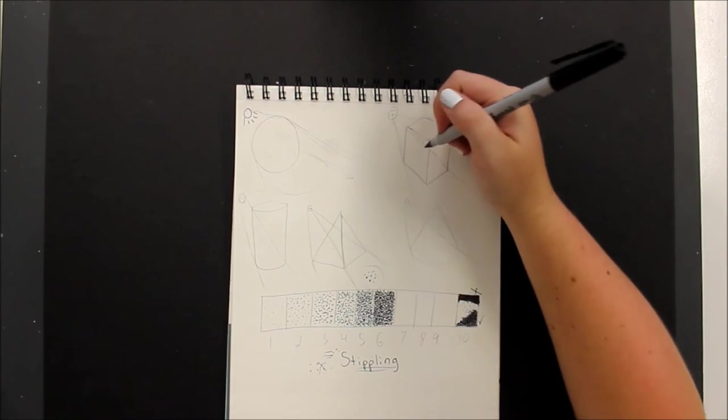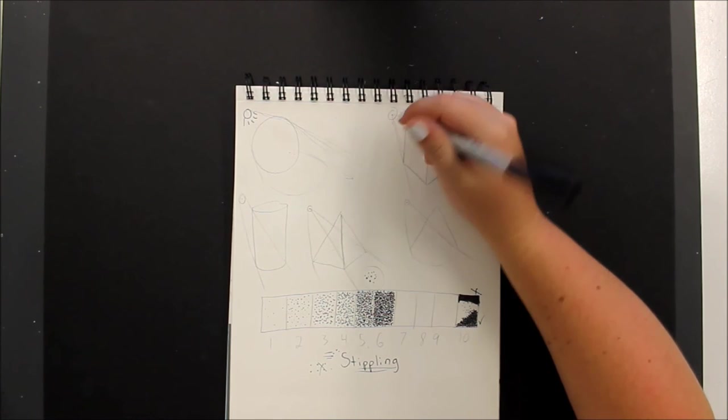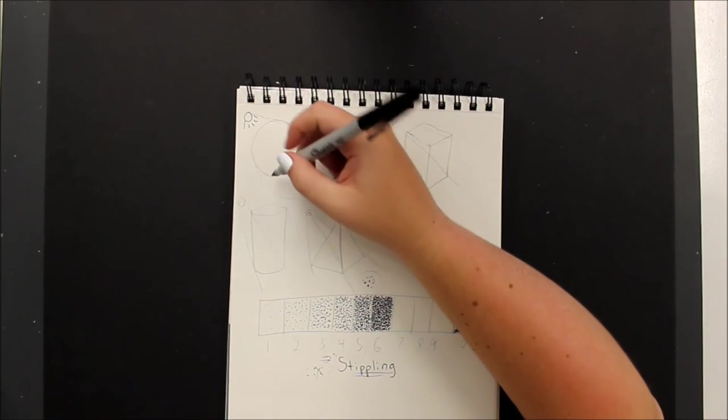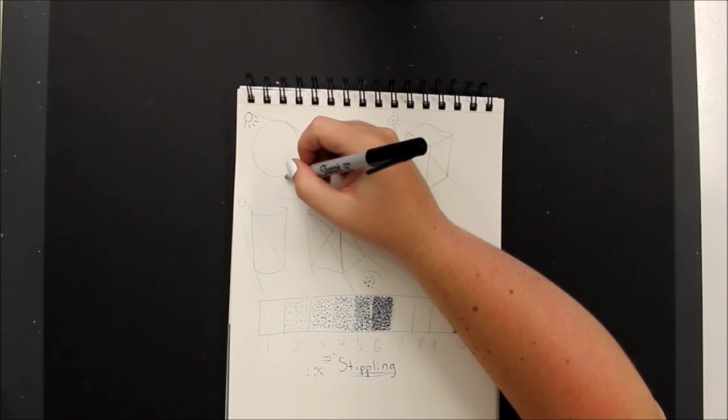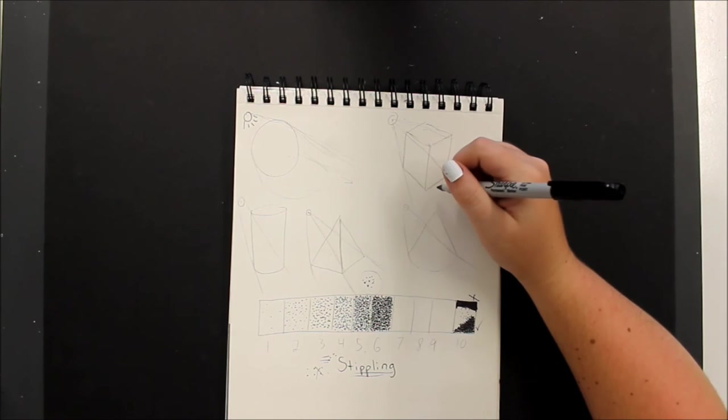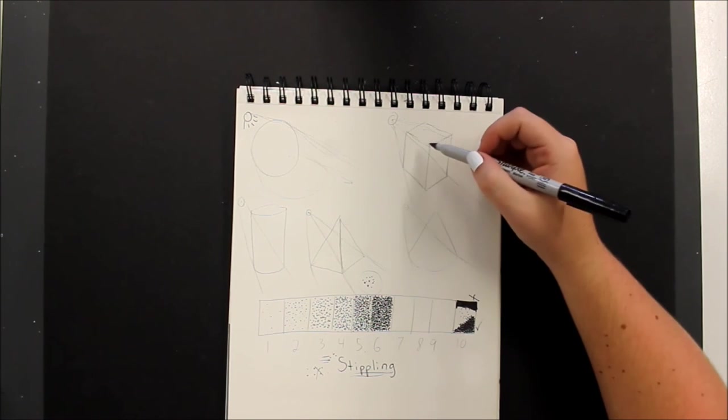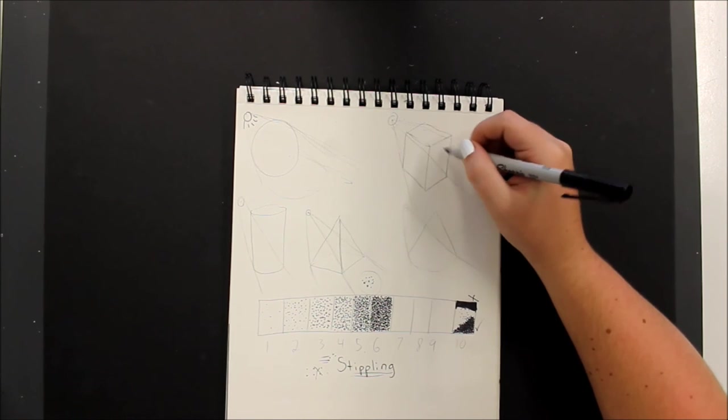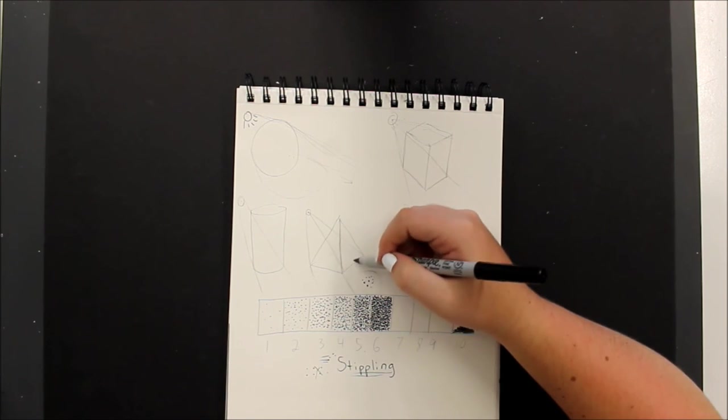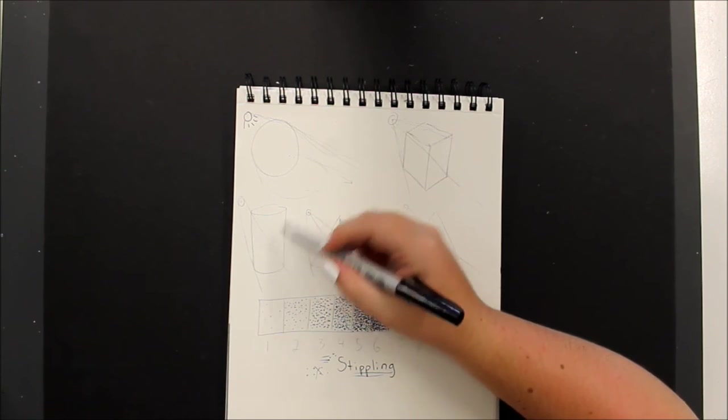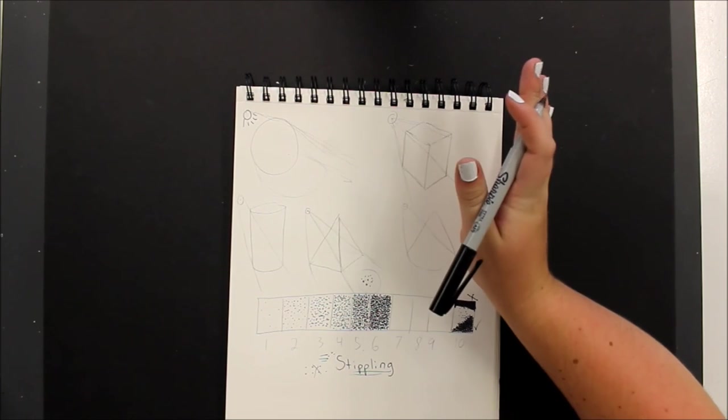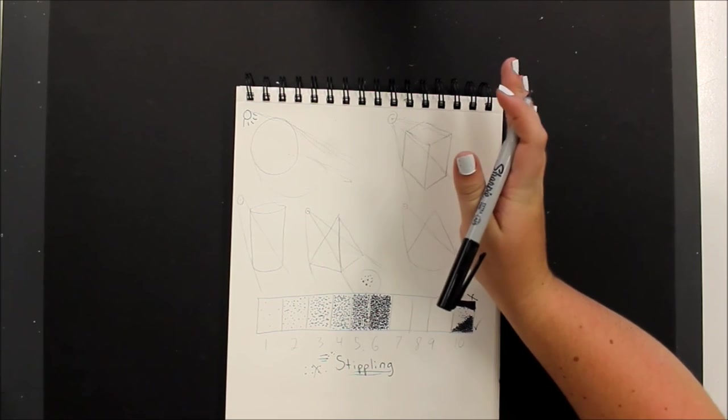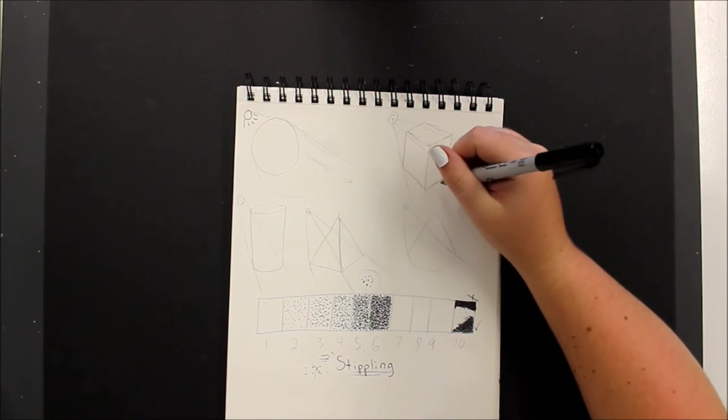So now I can go in with my Sharpie and thinking about what is closest to my object shadow-wise should be the darkest and also the fact that this side here, this side here, and as I curve around the cylinder, is going to be the darkest because it's receiving the least amount of light. It's most blocked by the rest of the object.